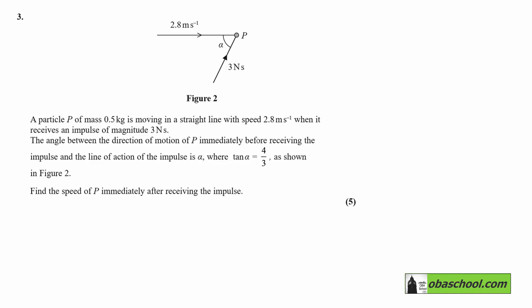Particle P of mass 0.5 kilograms is moving in a straight line with speed 2.8 meters per second when it receives an impulse of magnitude 3 Newton seconds. The angle between the direction of motion of P immediately before receiving the impulse and the line of action of the impulse is alpha, where tan alpha is 4/3 as shown in Figure 2. Find the speed of P immediately after receiving the impulse.